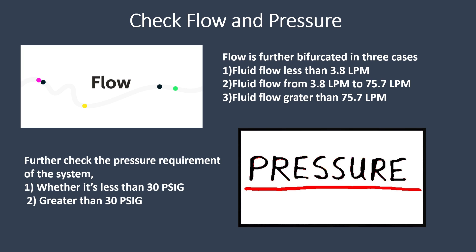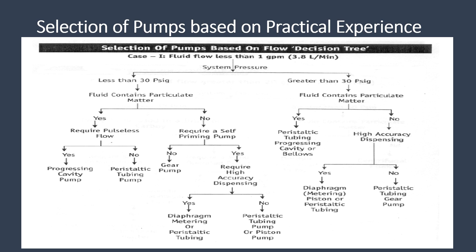For example, for fluid flow less than 3.8 lpm, check the selection as per decision tree Case 1. If system pressure is less than 30 psig, further check for particulate matter in the fluid. If the fluid contains particulate matter and requires pulse-less flow, select a progressing cavity pump; if pulse-less flow is adequate, select a peristaltic pump, commonly used in pharmaceuticals. If the fluid does not contain particulate matter, options include gear pump and diaphragm pump. Further selection is based on priming and accuracy. For pressure greater than 30 psig, pump selection is based on particulate matter and accuracy.